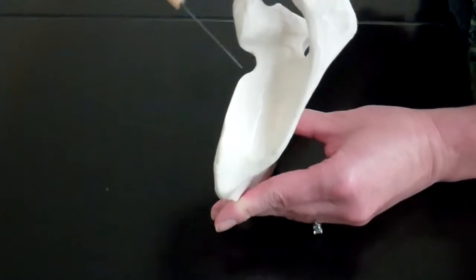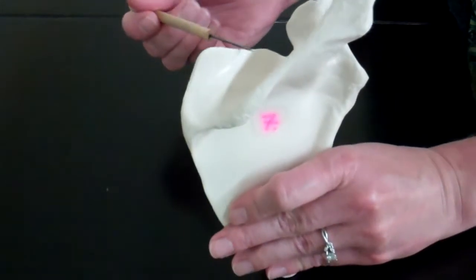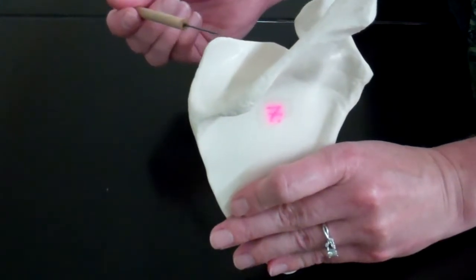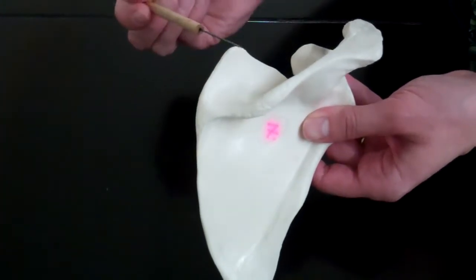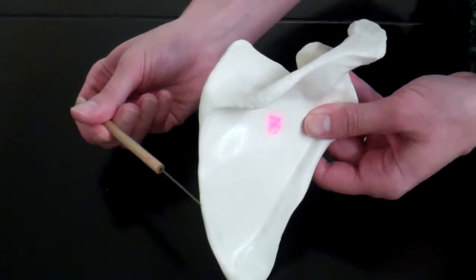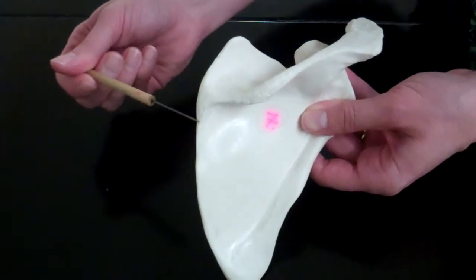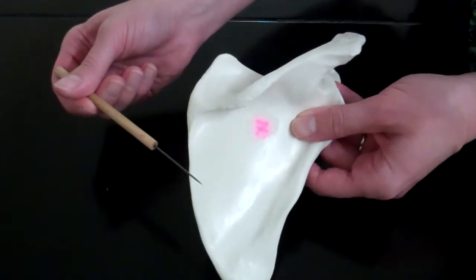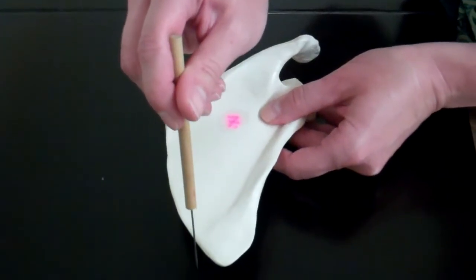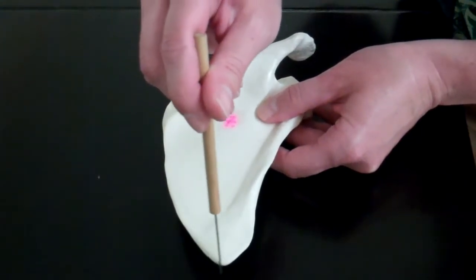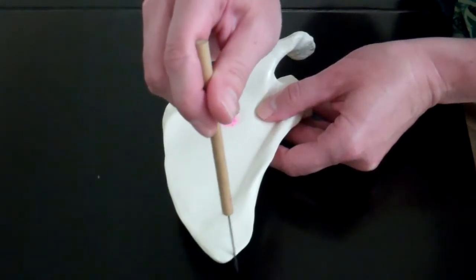And if we follow that up you can see there is an angle right there that is our superior angle. The superior angle we can follow along the whole side of the scapula, this is what we call the medial border. Now if we follow that piece down to the tip at the bottom, this is our inferior angle.